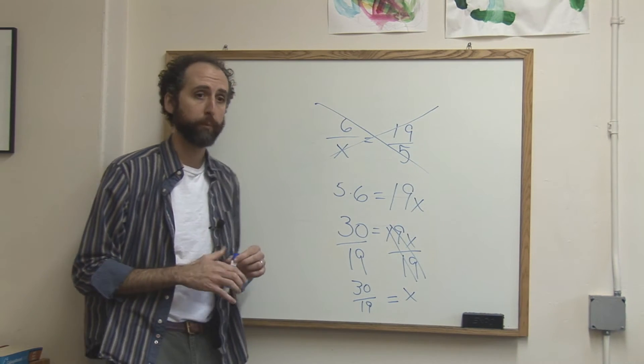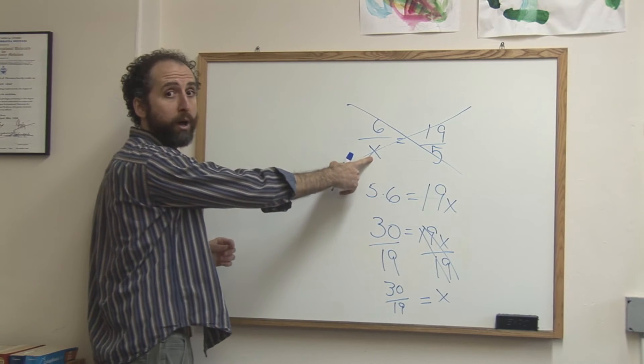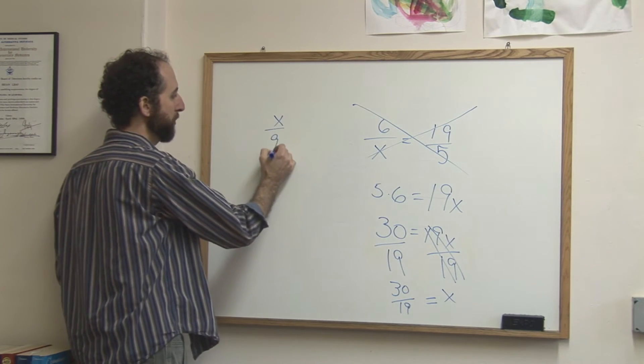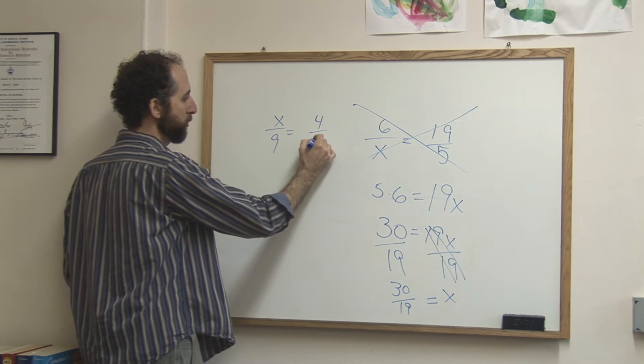Let's take a look at a second example. Here we had x on the bottom. Let's put x on one of the tops. So let's say you had x over 9 equals 4 over 27.